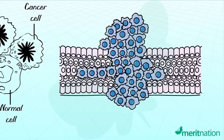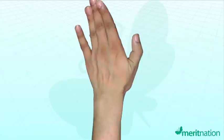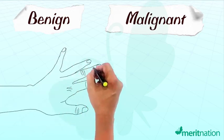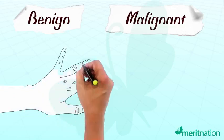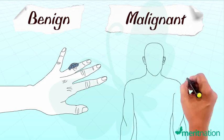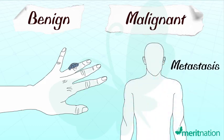As a result, these cells divide continuously to give rise to a mass of cells called tumors. Tumors are of two types: benign and malignant. A benign tumor remains localized and does not invade nearby tissue or spread to other parts of the body. Malignant tumors exhibit metastasis — cells from such tumors reach distant sites and form new tumors wherever they reach.